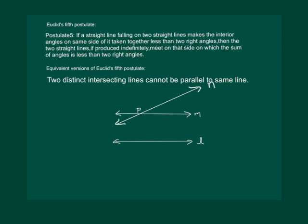Hence the result: two distinct intersecting lines cannot be parallel to the same line.